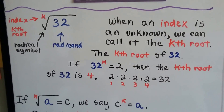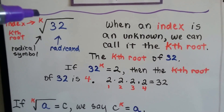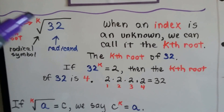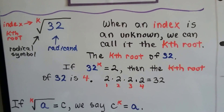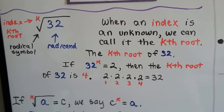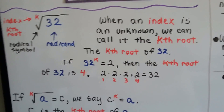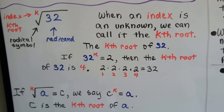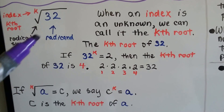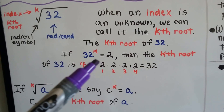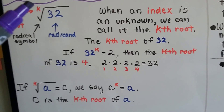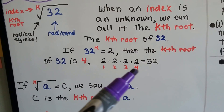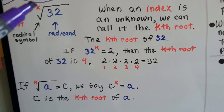In the previous videos, we learned that we have an index up here in the upper left. We have our radical symbol, that's our radicand. We have a little k here — that's the kth root. When an index is unknown, we can call it the kth root, just like we could say to the nth degree or to the nth power. The kth root of 32: if the root is a 2, then the kth root here would be a 4 because 2 times 2 times 2 times 2 equals 32 — we'd have 4 of them, so we'd put a little 4 up there.